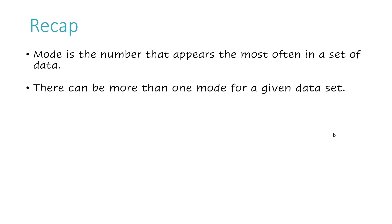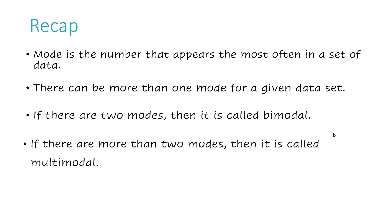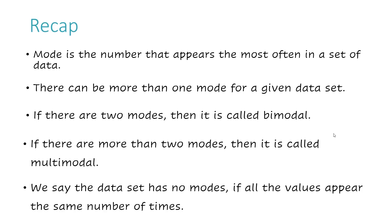Now let's take a recap. The mode is the number that appears the most often in a set of data. There can be more than one mode for a given data set. If there are two modes, it's called bimodal. If there are more than two modes, it's called multimodal. We say the data set has no modes if all the values appear the same number of times.